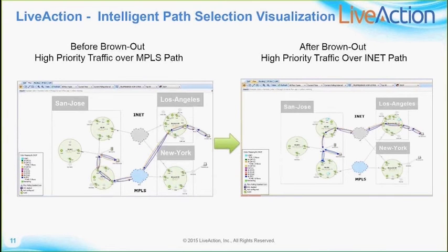A key reason customers incorporate LiveAction into the iWAN solution is its amazing visibility of traffic flipping from one service provider to another. It shows colorful NetFlow lines traversing from site to site — for example, San Jose to Los Angeles going across the MPLS path. When a brownout occurs on the MPLS path, PFR v3 automatically flips that traffic over to the internet path, and you can see that happening in real time through LiveAction.